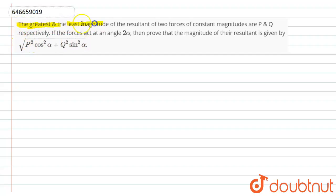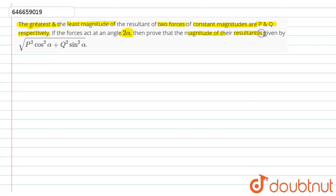Hello students. The question is: the greatest and the least magnitude of the resultant of two forces of constant magnitudes are p and q respectively. If the forces act at an angle of twice alpha, then prove that the magnitude of the resultant is given by the square root of p squared cos squared alpha plus q squared sin squared alpha.